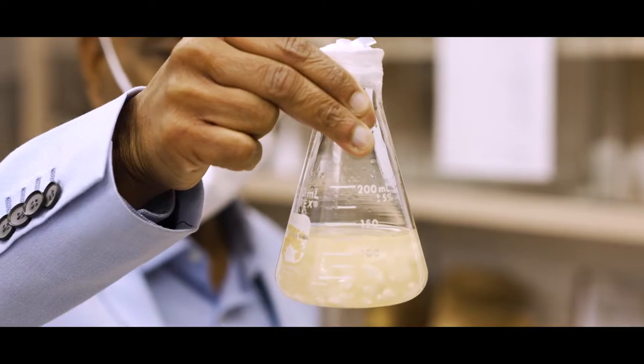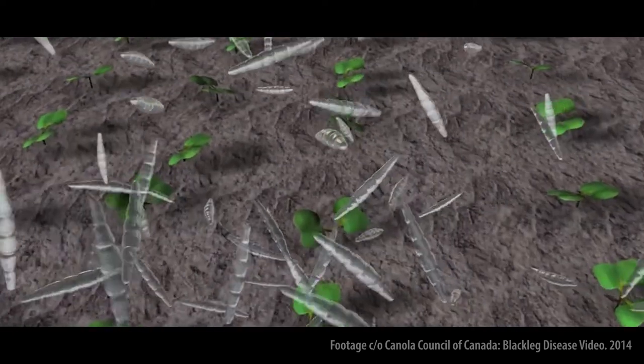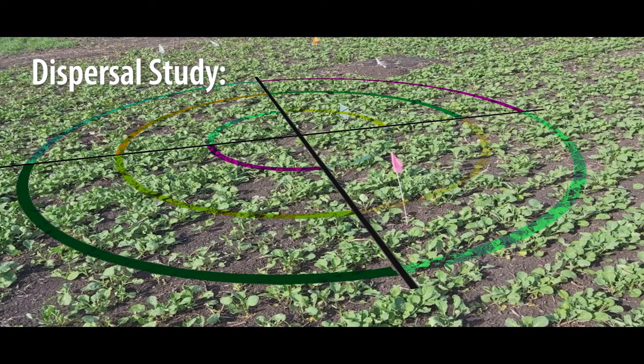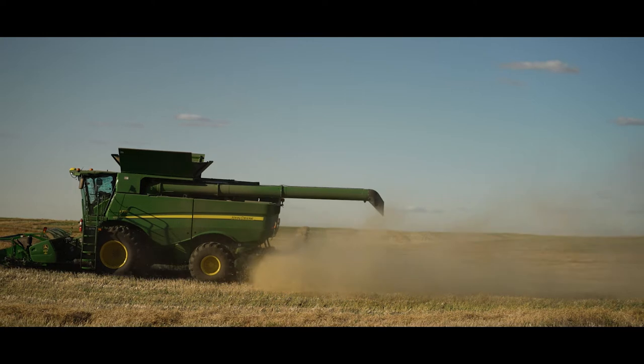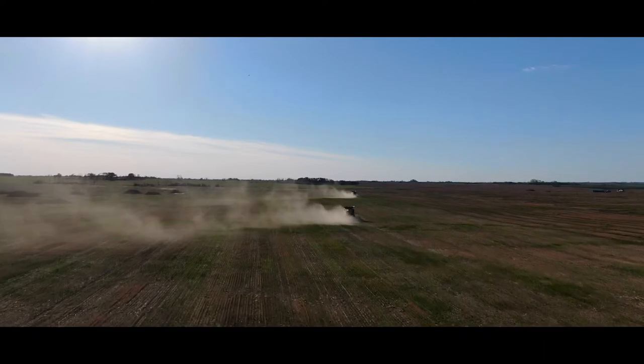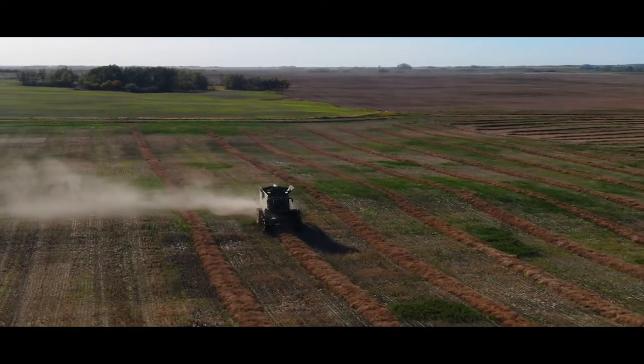When you think about dispersal, in blackleg or sclerotinia, there's air movement and air-borne inoculum movement. Now, in this particular pathogen, it's soil-borne, so it doesn't particularly eject spores to the air. However, because the microsclerotia are so small, it is almost like a soil particle that moves with machinery, with wind, high wind, and tillage practices because you are moving the soil. So all those things that we know move the clubroot pathogen can be accounted for in the verticillium stripe pathogen as well.